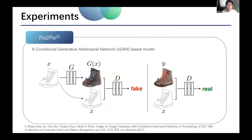In experiments, we chose three models. The first is PIX2PIX, a conditional generative adversarial network-based model. The discriminator D learns to classify between fake and real image-sketch tuples, and the generator G learns to fool the discriminator, unlike unconditional GAN. Both the generator and the discriminator observe the input edge map. PIX2PIX is the only model that requires image-sketch paired data during our experiment.